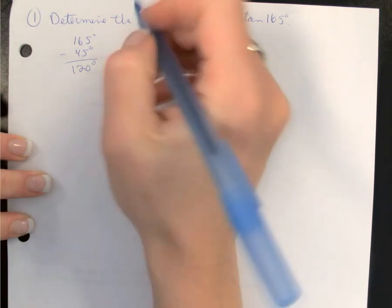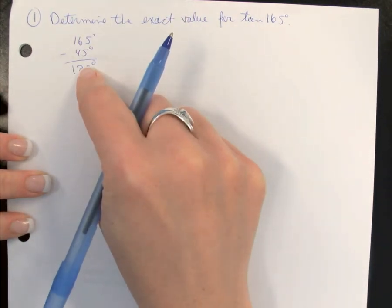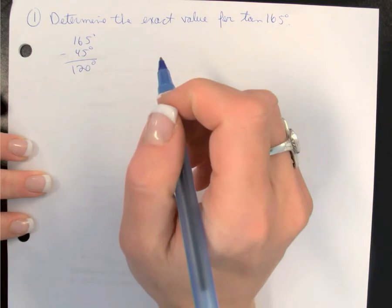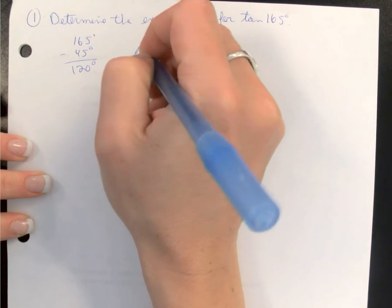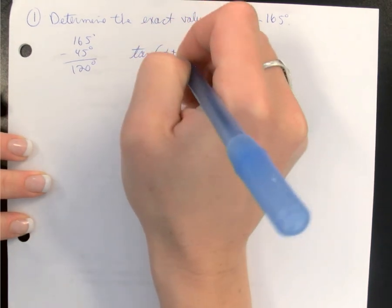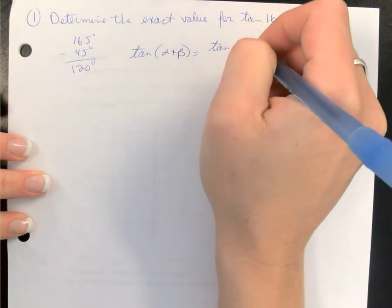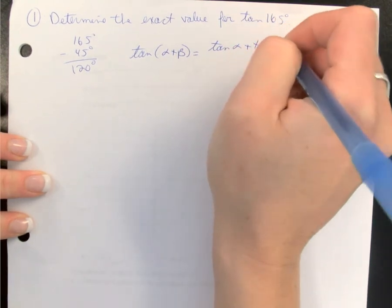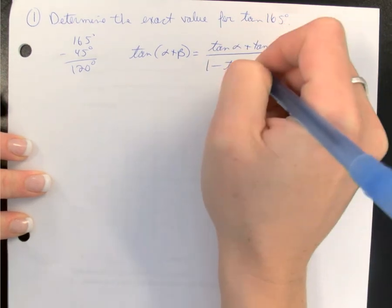So we know that 45 plus 120, so I can use a sum formula, will give me 165 degrees. I'm going to use the sum formula for tan. Let me write that formula out, which would be on your formula sheet. We have tan α plus tan β divided by 1 minus tan α times tan β.